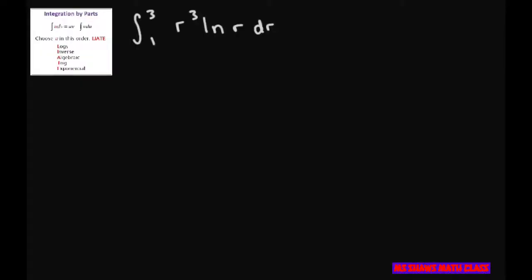When we do that, we're going to use this formula and choose our U. We need to set it up so we can use the right-hand side. We're going to use natural log as our U and R cubed for everything else.